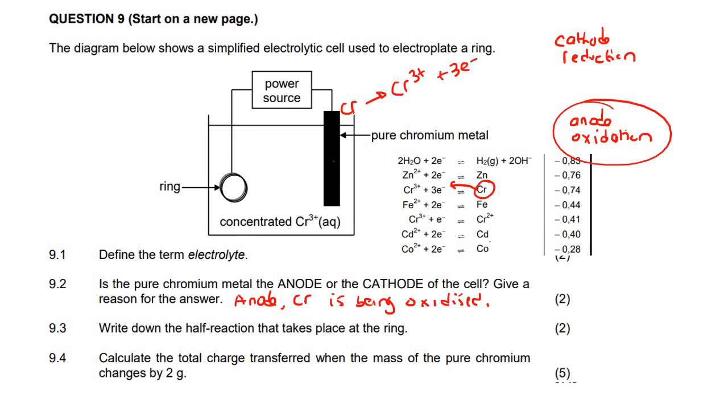Then it says write down the half reaction that takes place at the ring. Well, what happens now is that these Cr³⁺, they move over to the ring. And then what happens is that the reverse of this happens. So the reverse of this one.